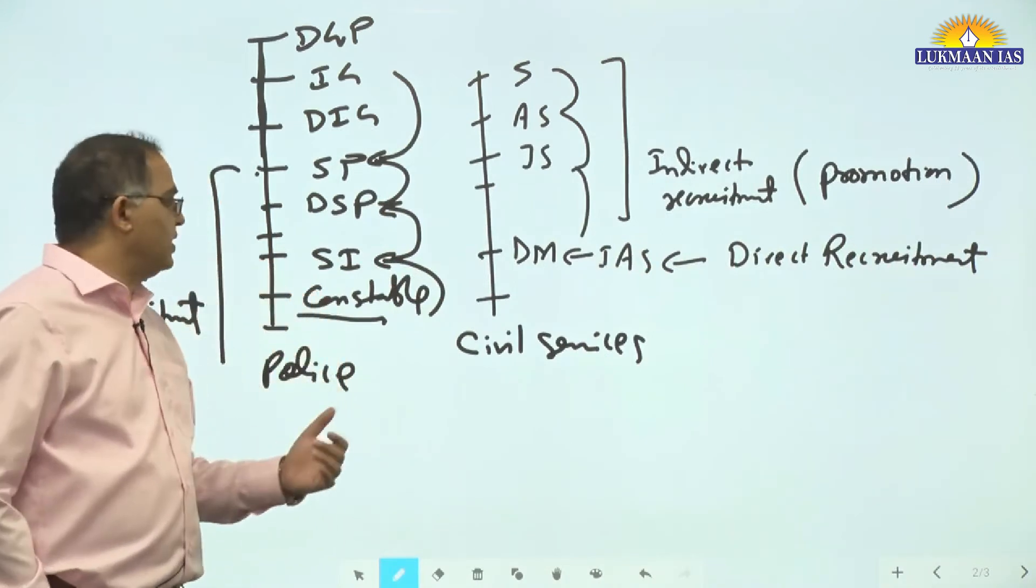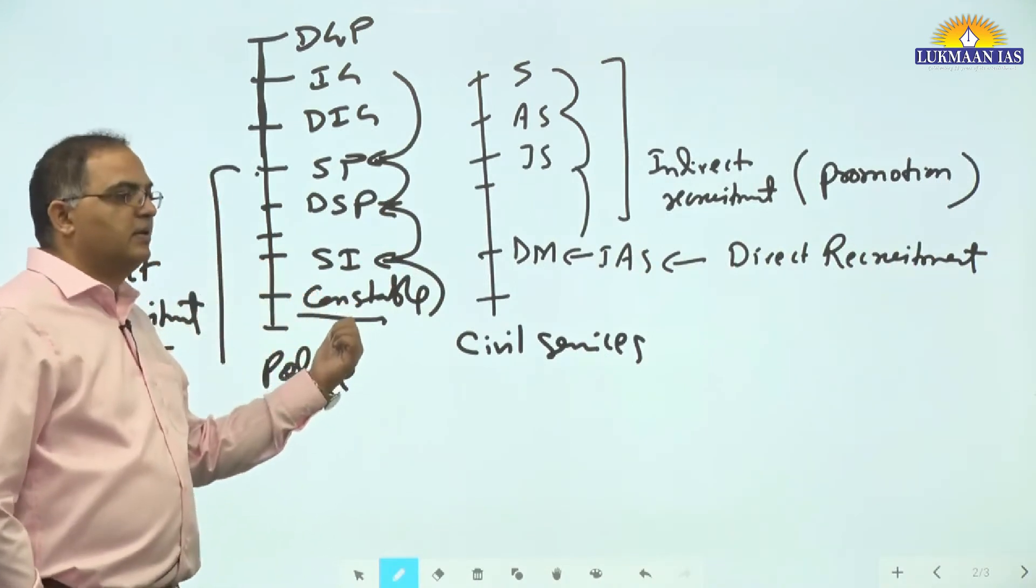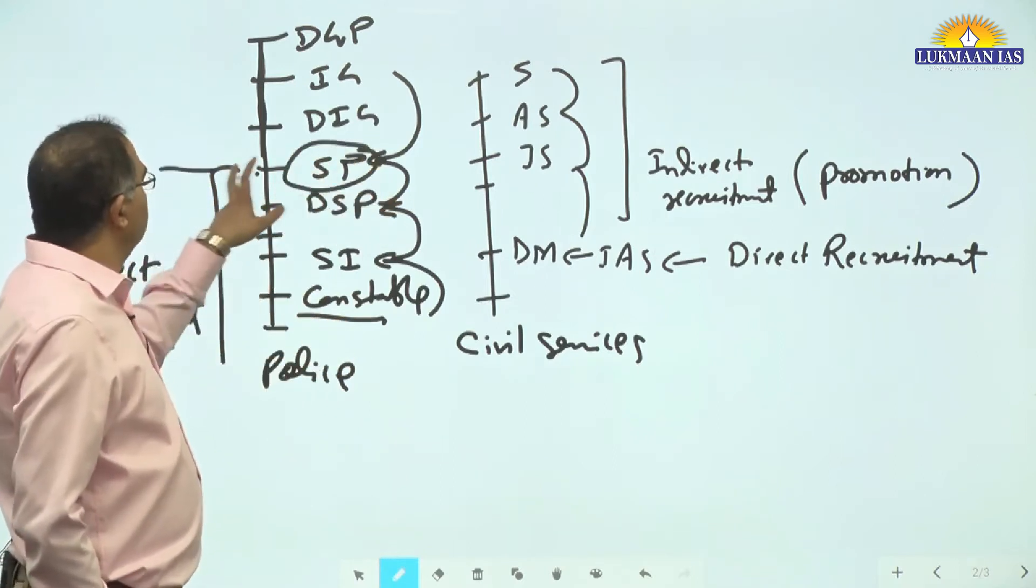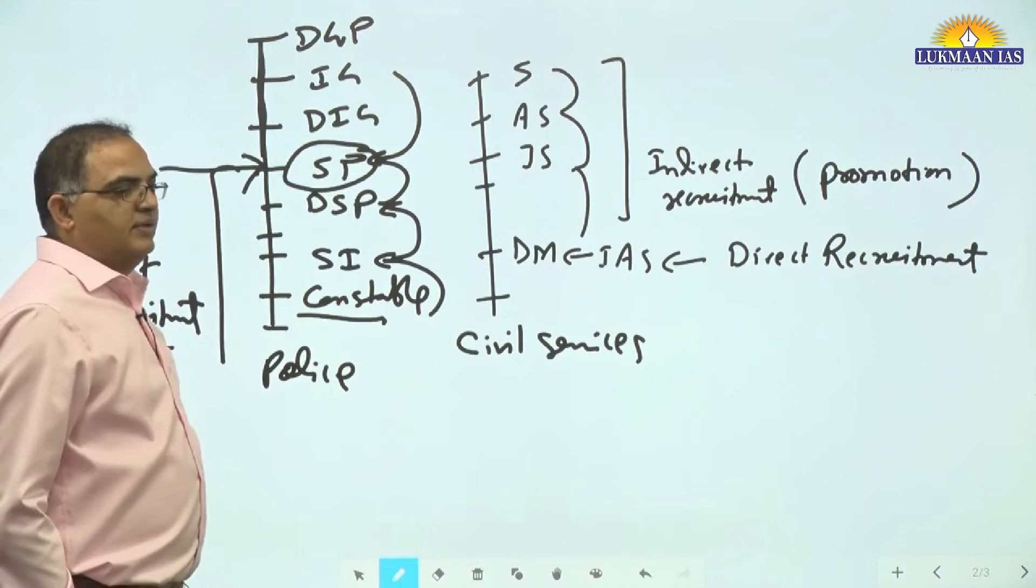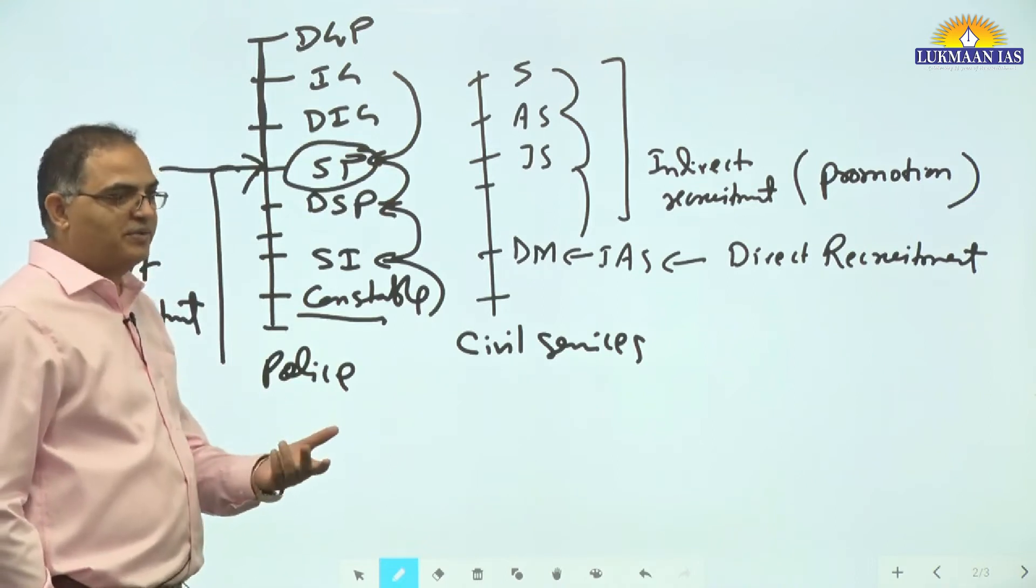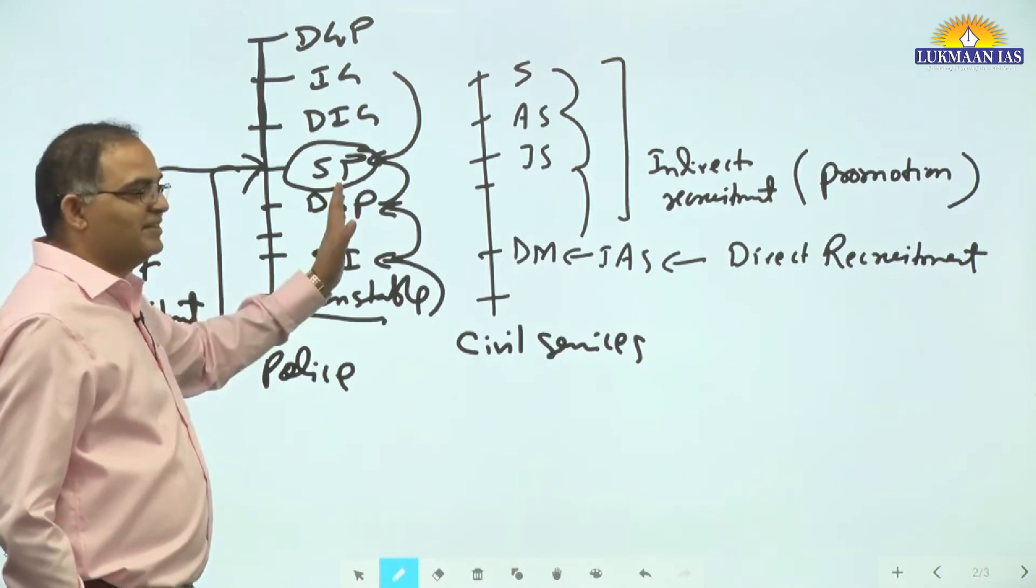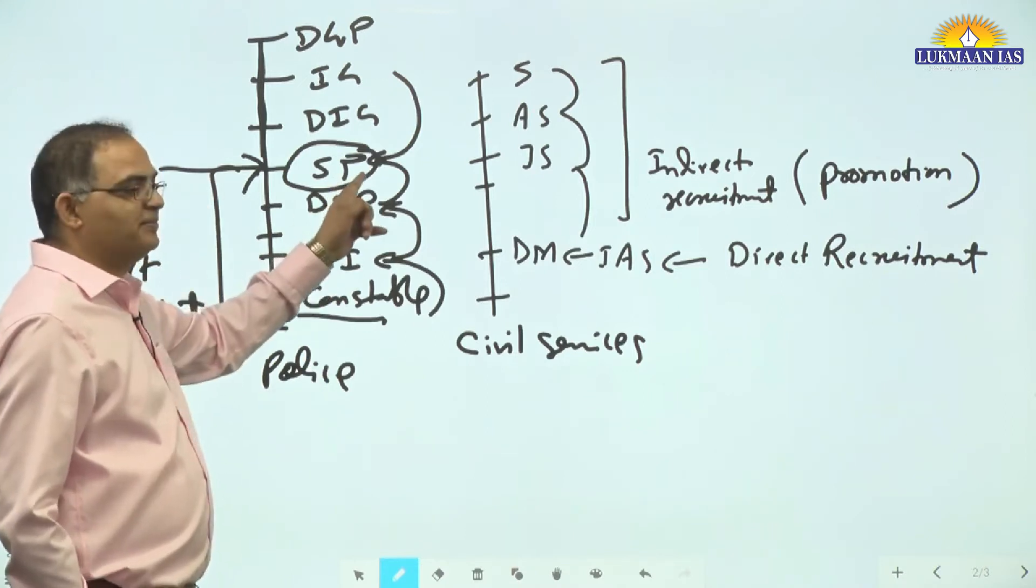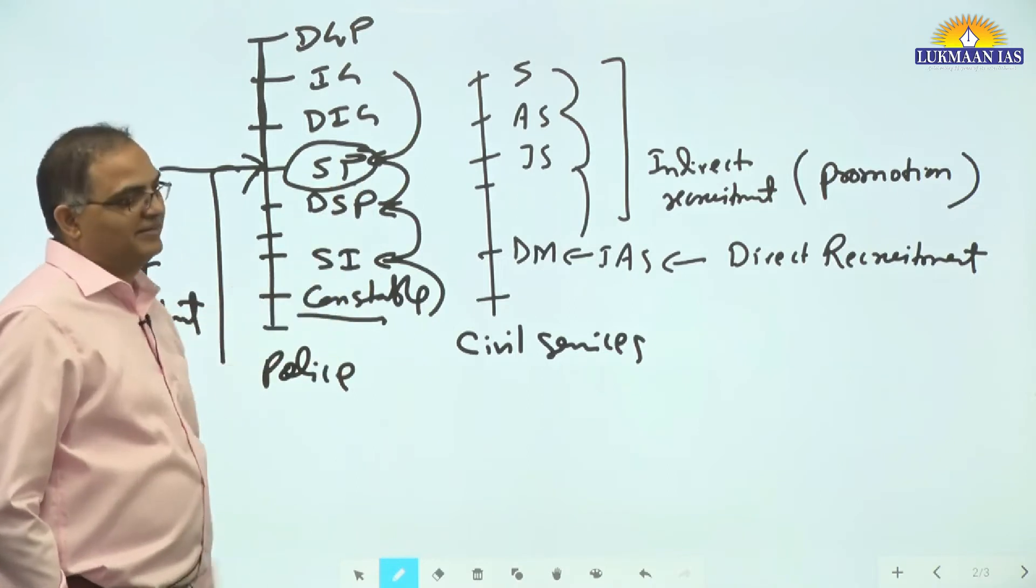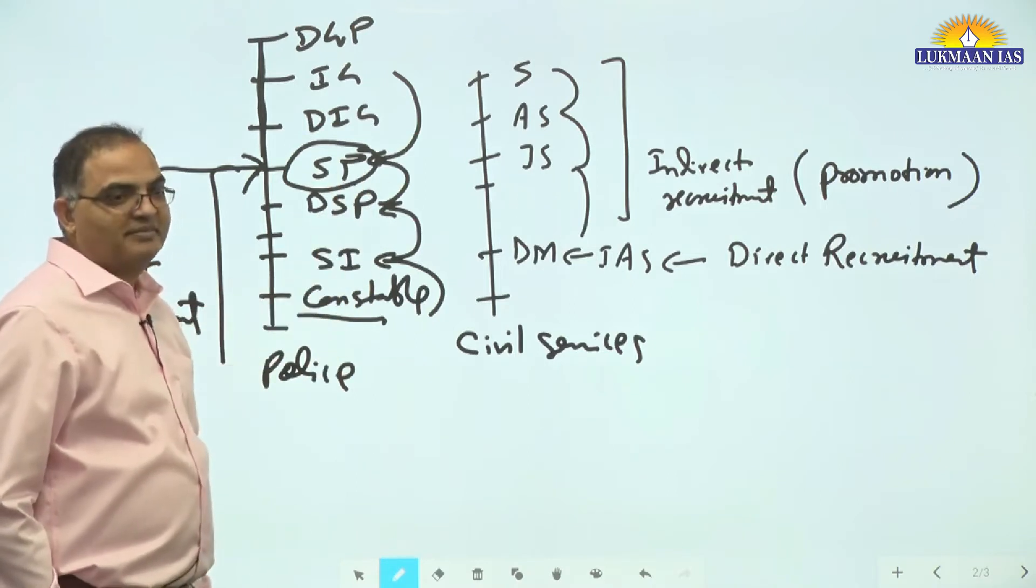Direct recruitment means people will directly like to come to higher positions. You should know this - people give preference to direct recruitment. They do not want to come at lower level, rather they want to come directly at higher positions. But suppose this route is easier than the other route.